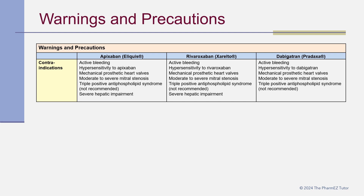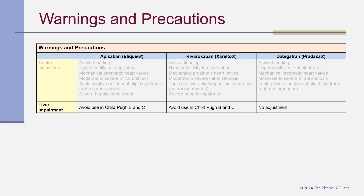Contraindications to all three DOACs include active bleeding, hypersensitivity to the drug, mechanical prosthetic heart valves, moderate to severe mitral stenosis, and triple-positive antiphospholipid syndrome. Severe hepatic impairment is a contraindication only for apixaban and rivaroxaban, which should be avoided in moderate to severe liver impairment, while dabigatran requires no adjustment for liver impairment.